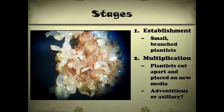In the second stage, called multiplication, you take the plantlets that formed during establishment, cut them apart into individual shoots, and place them on a new media. That media is going to have a high cytokinin to auxin ratio — it will contain both cytokinin and auxin usually, with more cytokinin than auxin — because this is the time during which the shoots multiply. We want to get a lot of shoots during this stage.